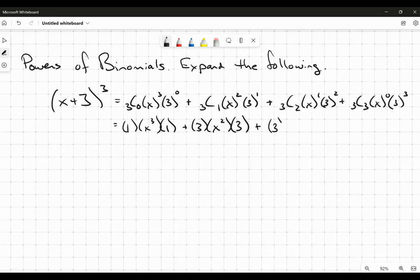3 choose 2 is also going to be 3. Then we have x to the 1, and then 3 squared is 9. 3 choose 3 is 1. x to the 0 is 1. And 3 cubed is 27.